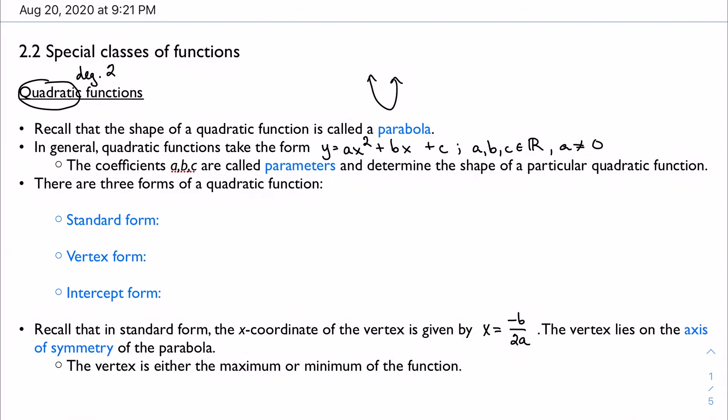We're also going to call these coefficients parameters, and parameters are going to help determine the shape of our quadratic functions. And actually, this is true of any function. The parameters of any function are going to influence the shape and the orientation of any particular function.